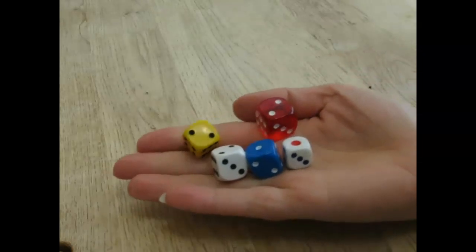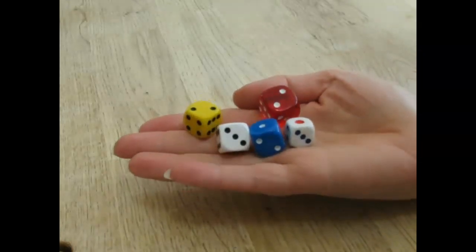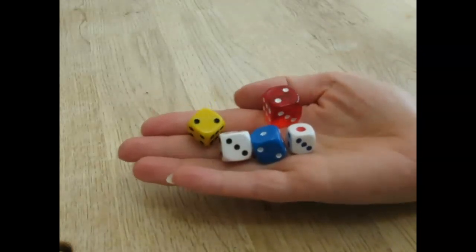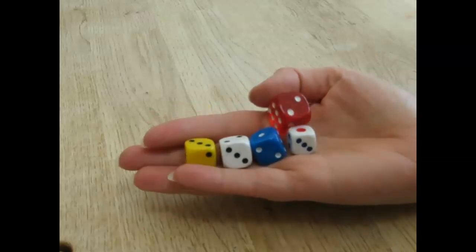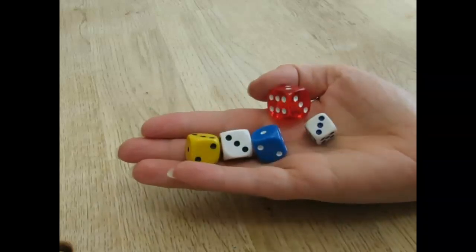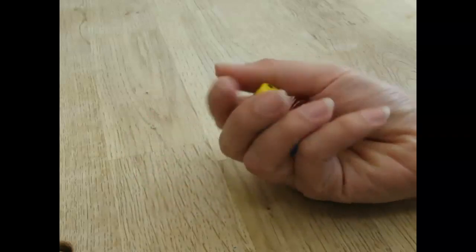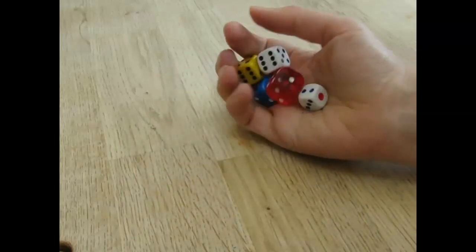A variation to this game is you take your dotty dice again but rather than getting all the dice the same you try and get them as consecutive numbers. So you might try and roll a one, two, three, four, five or a two, three, four, five, six. Let's have a go and see how quickly I can do this one.